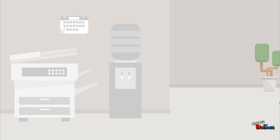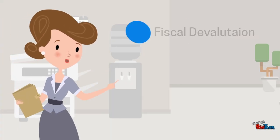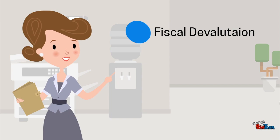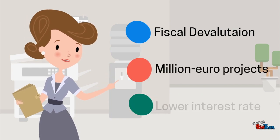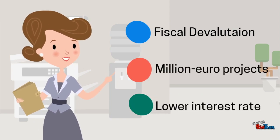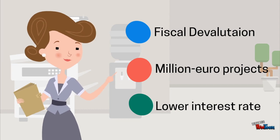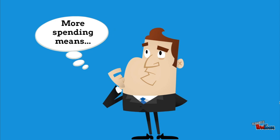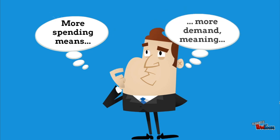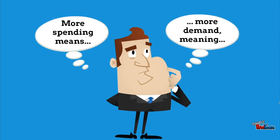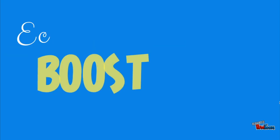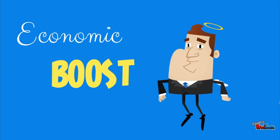Here are a couple of Keynesian ideas that were suggested as solutions: fiscal devaluation, plans to build multi-million euro projects, and a decrease in the interest rate of the ECB. All these measures, also called shocks, are meant to increase spending, boosting aggregate demand and ultimately boosting the economy.